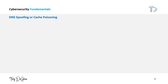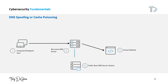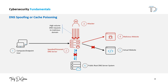Our first DNS attack vector is DNS spoofing or cache poisoning. DNS spoofing, also known as cache poisoning, is a type of cyber attack that targets the domain name system or DNS infrastructure. The goal of this attack is to alter the DNS records stored in a server or in a cache, redirecting traffic from legitimate websites to malicious or compromised websites.